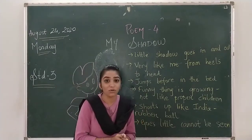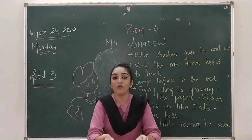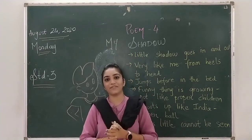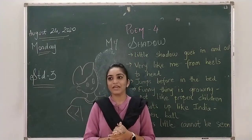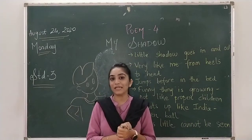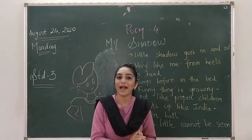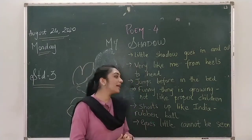The next point which the poem has is, the shadow jumps before the child in the bed. Now when the child is going to sleep, the shadow jumps in the bed before him.